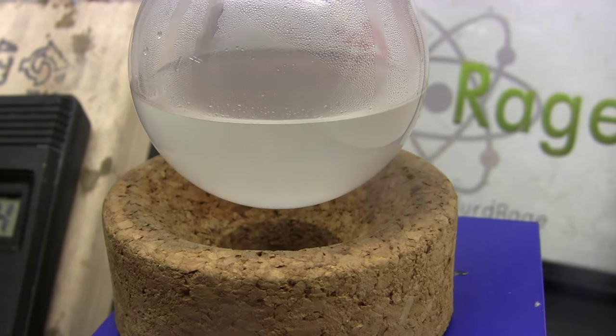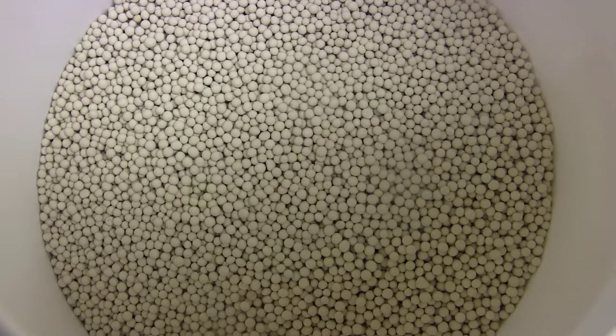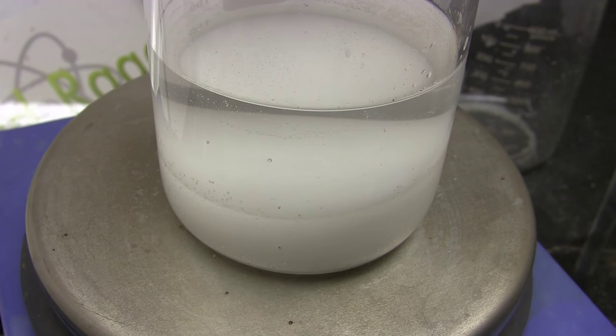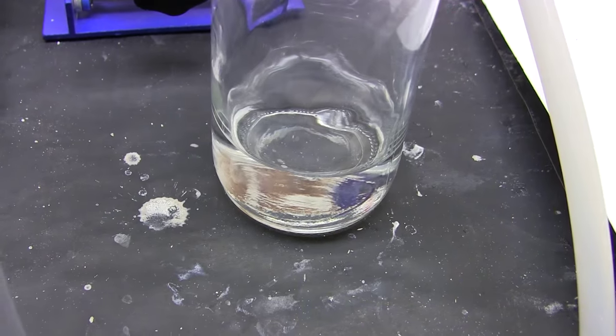Now we cannot dry it using molecular sieves since those decompose in acids like this. So instead we dry it with anhydrous sodium sulfate and then fractionally distill it. Now we get our proper boiling point of around 141 degrees. And there is our purified propionic acid.